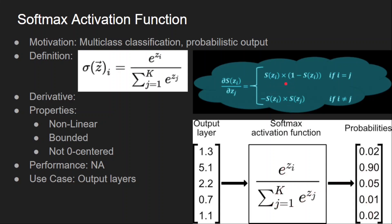The derivative of the softmax function is a bit complex because every output depends on all the outputs of other neurons due to the normalization factor. A detailed video on the softmax derivative is shared in the description. The properties of softmax: it is a non-linear function, bounded because values are always between 0 and 1, and not zero-centred because all values are positive. Its use case is only for the output layers in multi-class classification — it is not used in hidden layers.